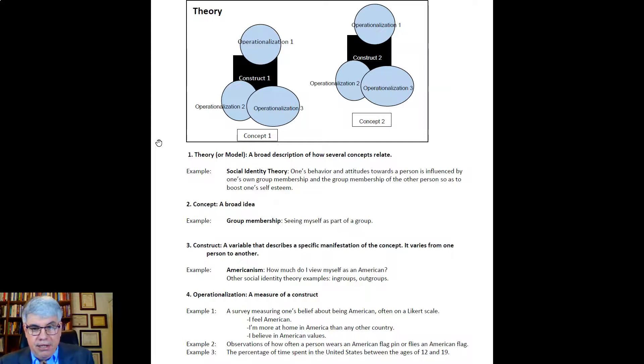Example one is that we could use a survey measuring one's belief about being American. This is measuring beliefs, things that go inside people's heads that they think are true. And often we put this on a Likert scale, going from strongly disagree, disagree, neither agree nor disagree, agree, and strongly agree. We could have people identify how strongly do you agree with the statements: I feel American, or I'm more at home in America than any other country, I believe in American values.